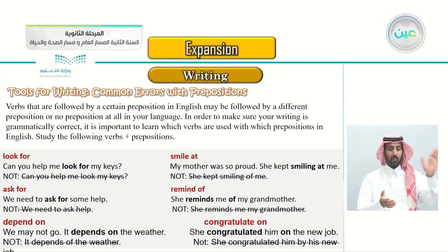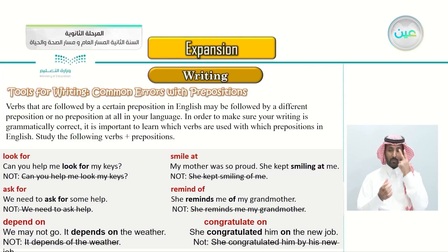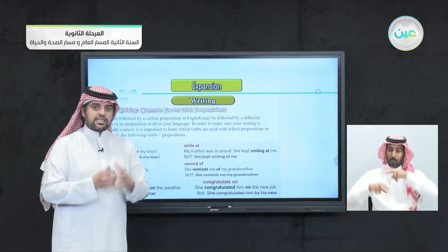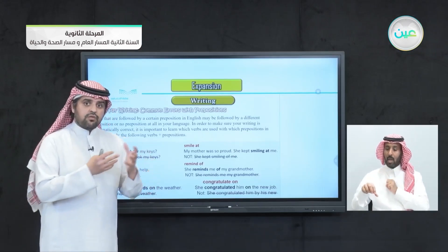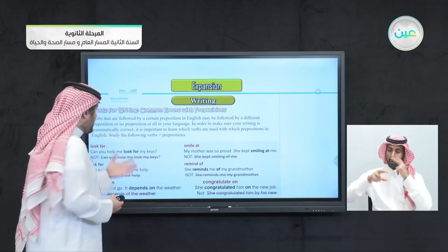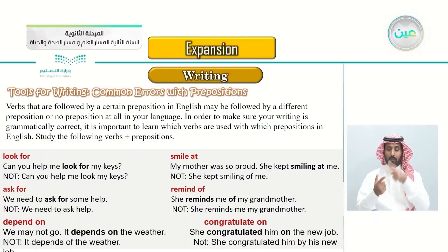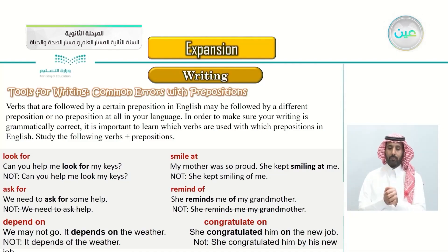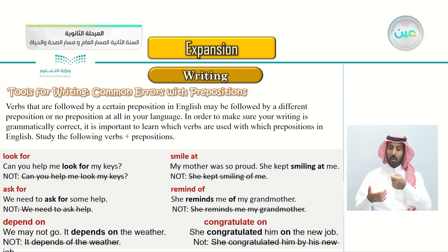Study the following verbs plus prepositions. The first one is 'look for' - can you help me to look for my keys? It means to search for something. The verb is 'look' and the preposition is 'for.' You can't say 'help me look my keys' - you must say 'help me look for my keys.'